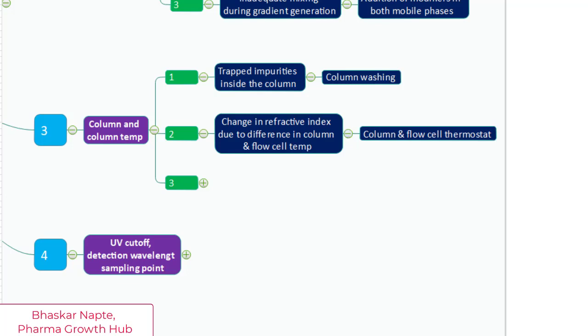The second point is change in refractive index due to difference in column and flow cell temperature. Another possible cause of baseline noise or wandering is refractive index difference or refractive index change due to temperature difference between the column and flow cell. I am talking about the refractive index of the solvent passing through the flow cell and this refractive index of solvent can change because of temperature. We know that temperature has a direct impact on the refractive index of any given solvent.